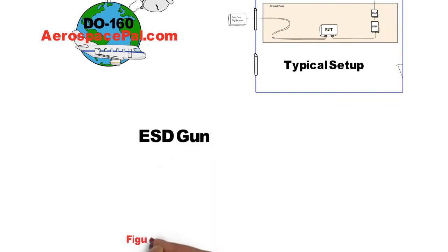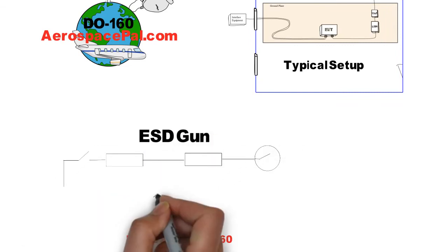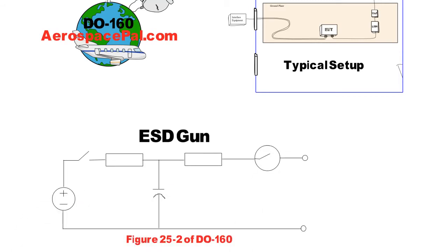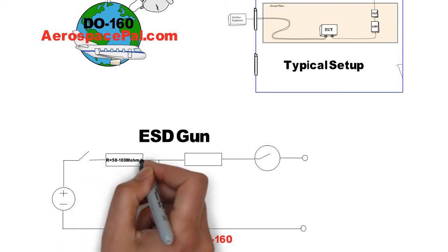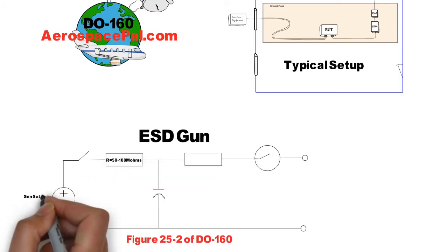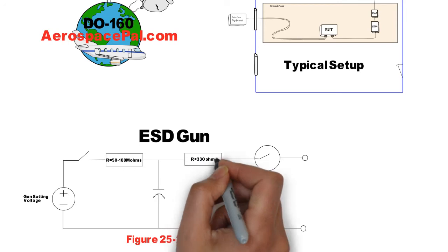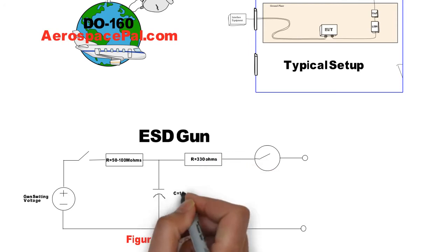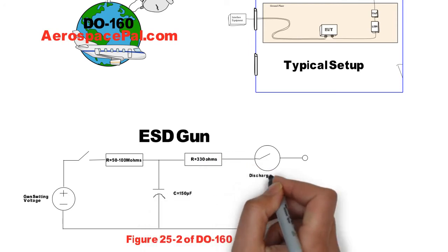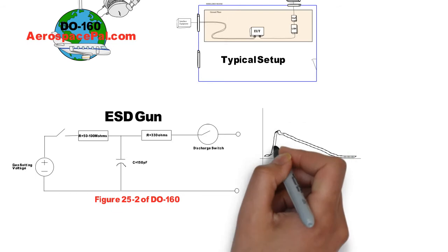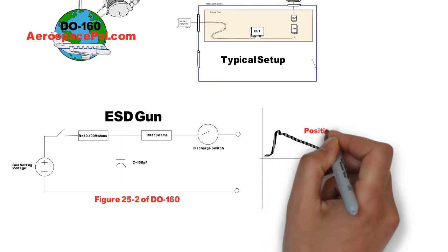The calibration for ESD generators or ESD guns is very vague. You need to use an ESD gun or generator that complies with figure 25.2 of DO-160, then record the GEN setting for both the positive and negative pulses needed.